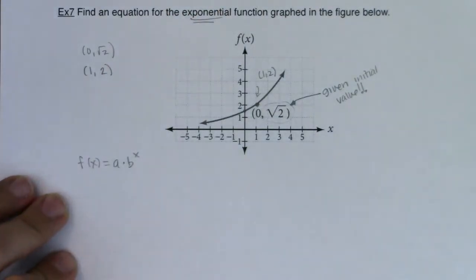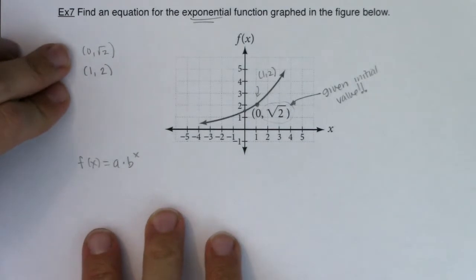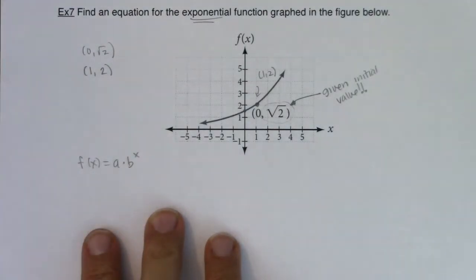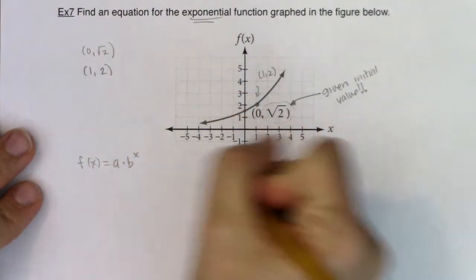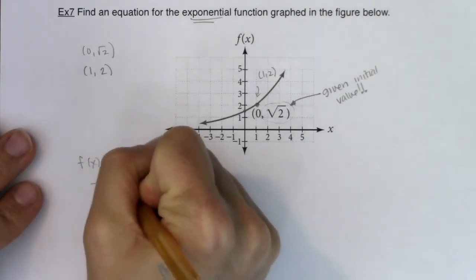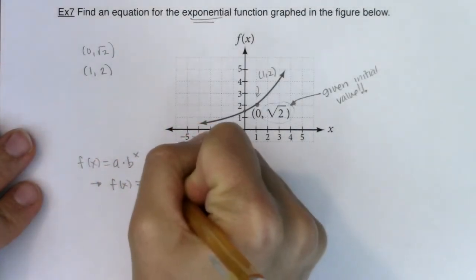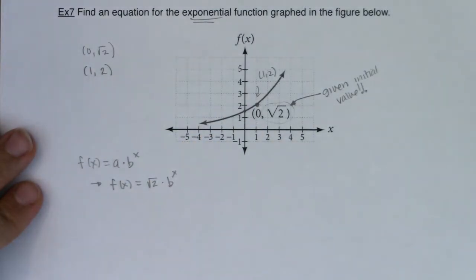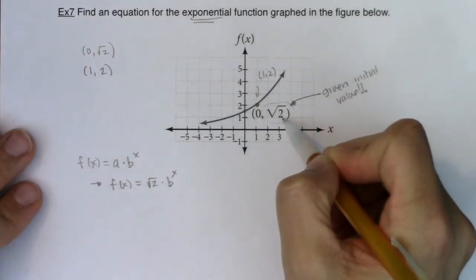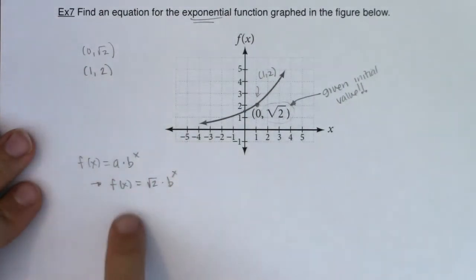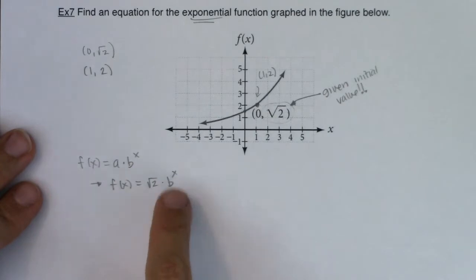Now again, once you have two ordered pairs, you can also hop over to your calculator and find the exponential model that way. I'll do that in just a moment. I just want to do this by hand also so you can see both options. So I know my initial value, which means I can write in √2 for my a value. So f(x) is going to equal √2 times b to the x. And the next thing I want to do is plug in my ordered pair into my function and solve for my base.